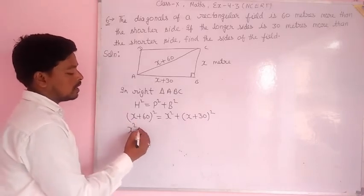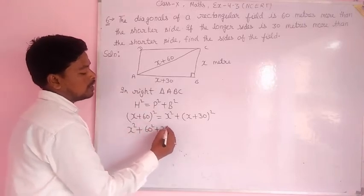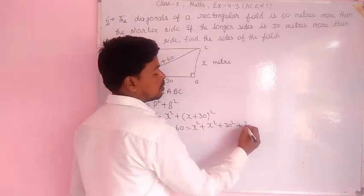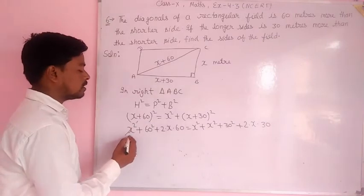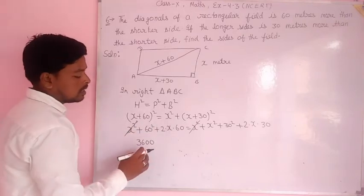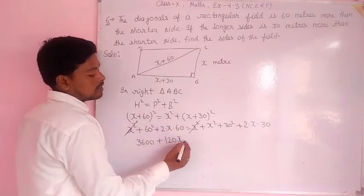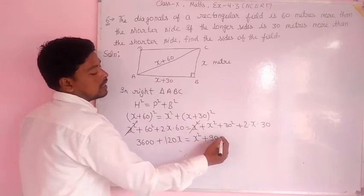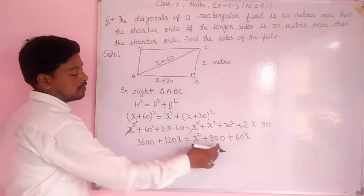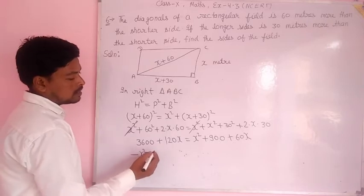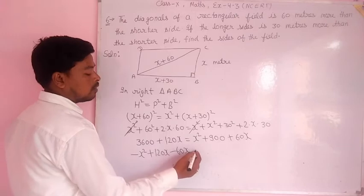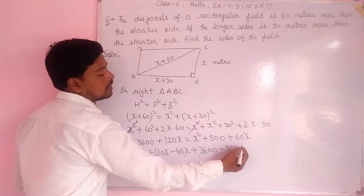Expanding using the formula A plus B whole squared: X squared plus 3600 plus 120X equals X squared plus 900 plus 60X. Converting to general form of quadratic equation.